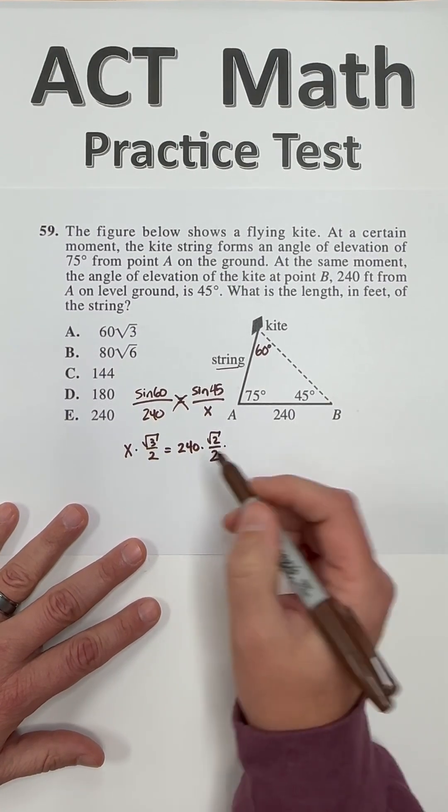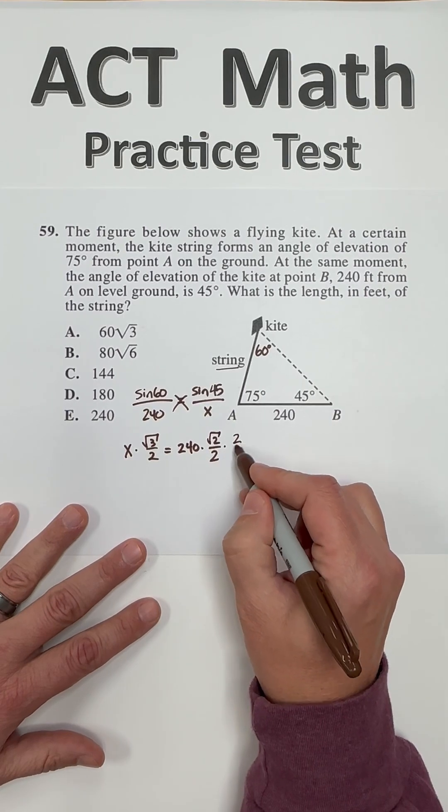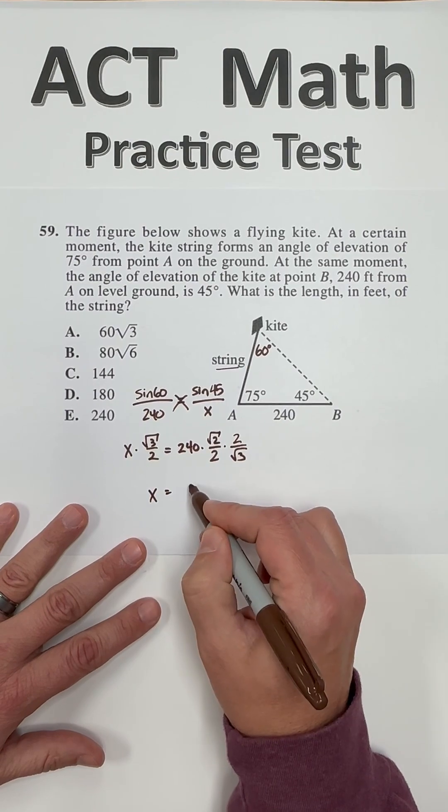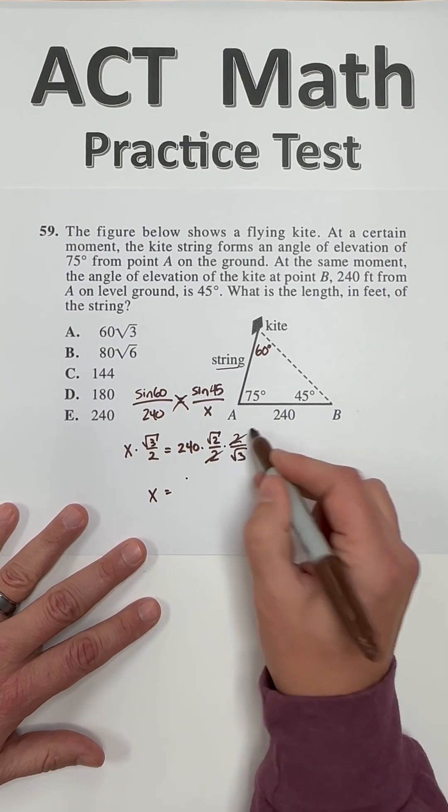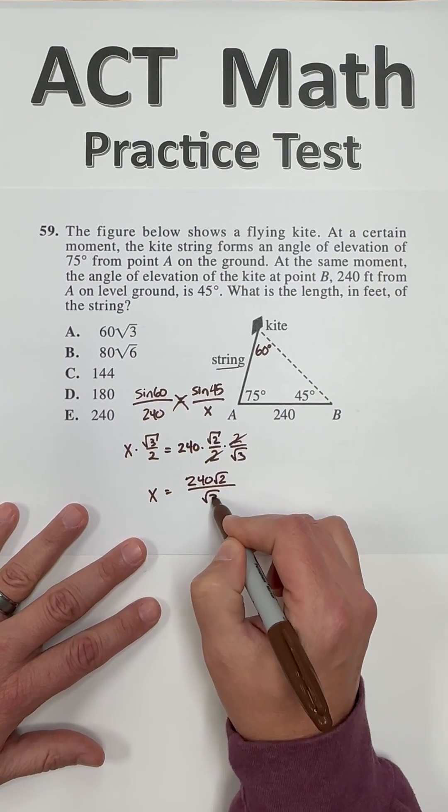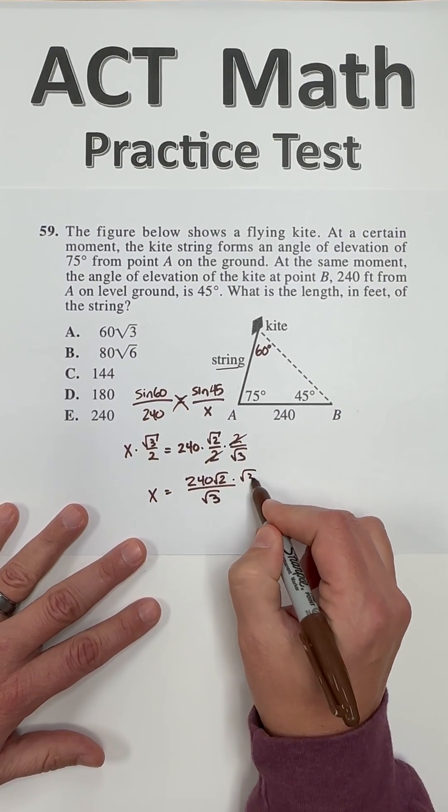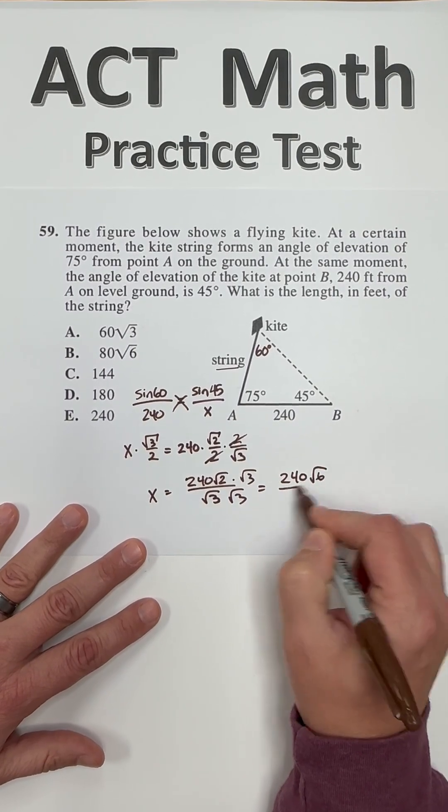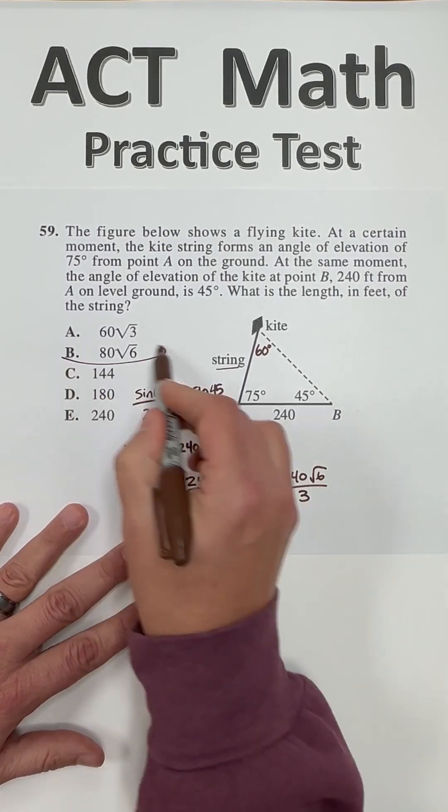So we're going to multiply both sides by the reciprocal 2 over square root 3 to give us x equals, cancel out here, so we have 240 square root 2 over square root 3. Multiply top and bottom by square root 3, which gives 240 square root 6 over 3.